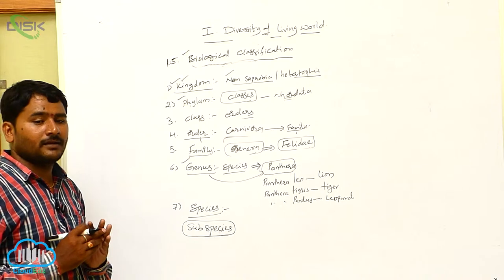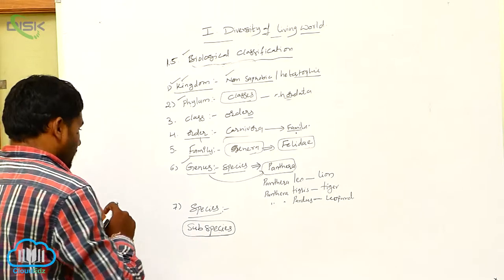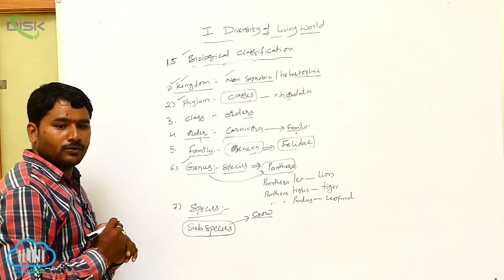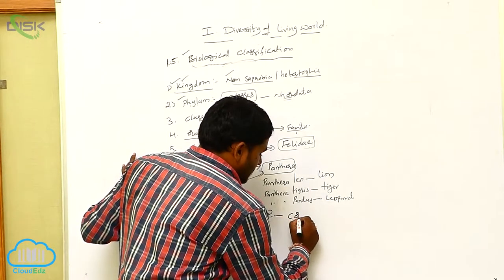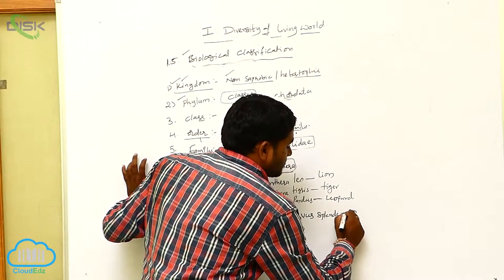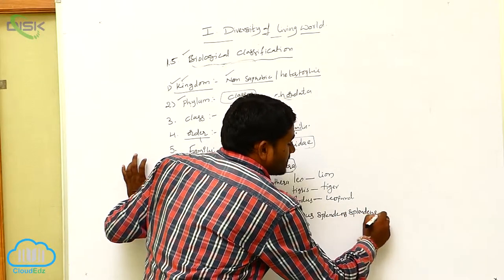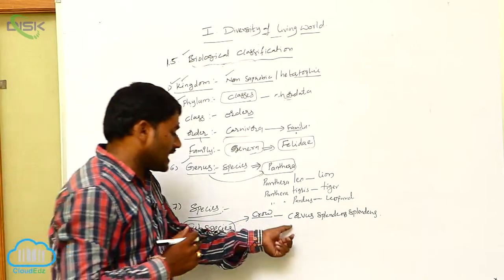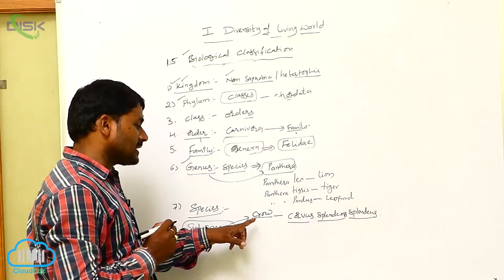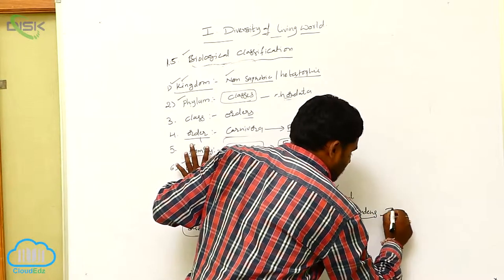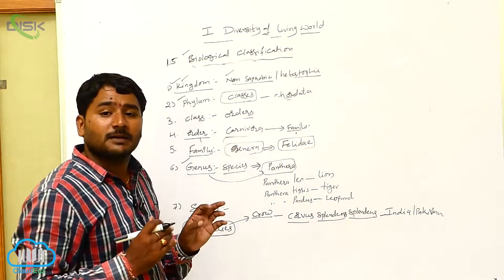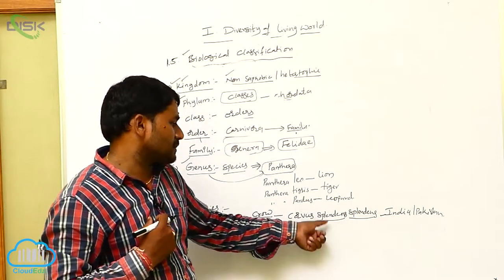Let us see some subspecies. For example, if you take subspecies of crow, there are three types. Generally, Corvus is the genus and splendens is the species. The subspecies of the crow living in India and Pakistan is Corvus splendens splendens.